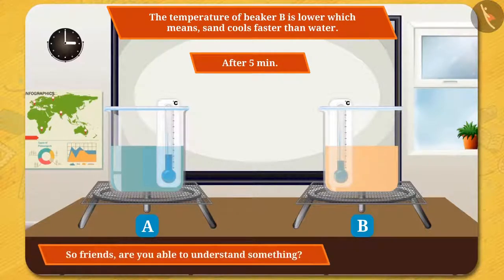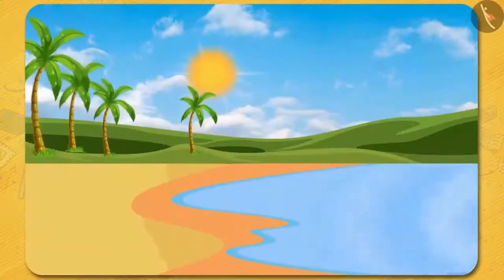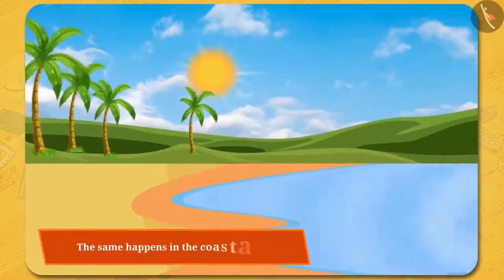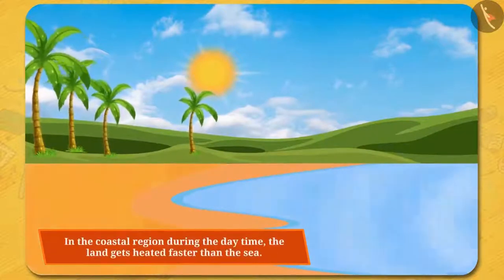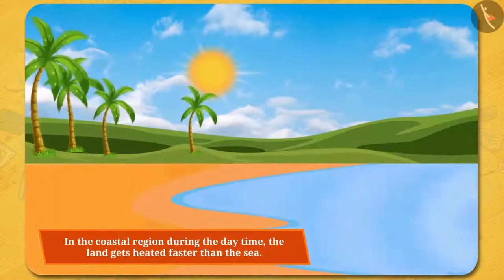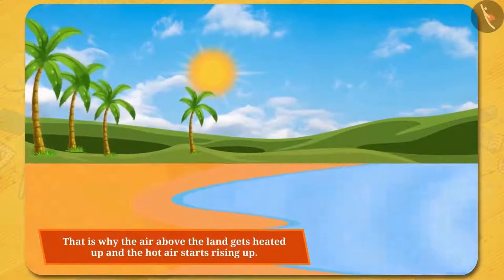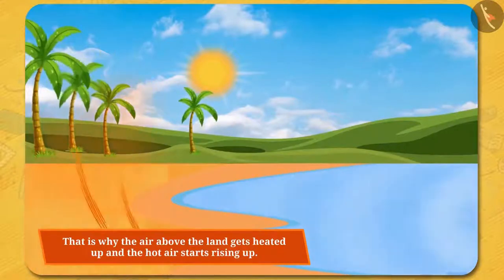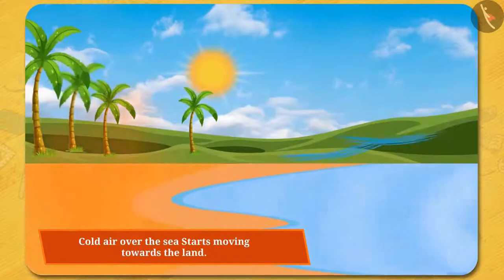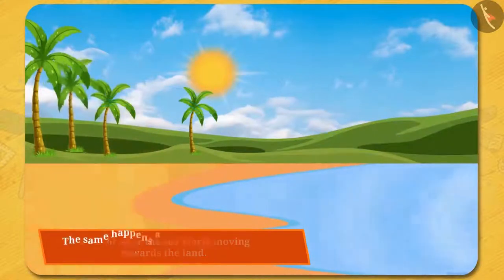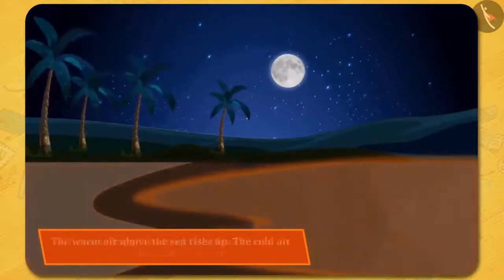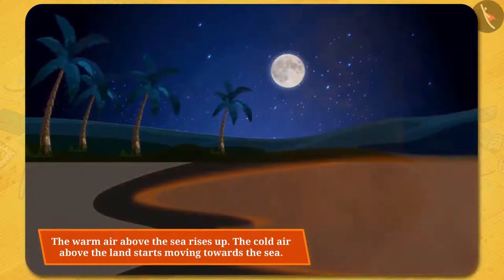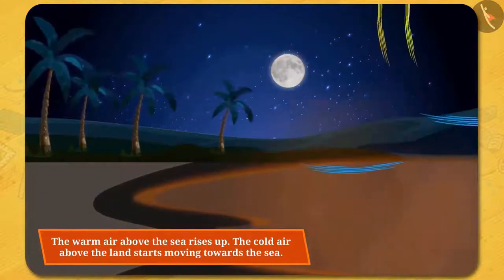So friends, sand heats and cools down faster than water. The same happens in the coastal region. During the daytime, the land gets heated faster than the sea. That is why the air above the land gets heated up and the hot air starts rising, and the cold air over the sea starts moving towards the land. The same happens at night — the land cools faster, and the warm air above the sea rises up, while the cold air above the land starts moving towards the sea.